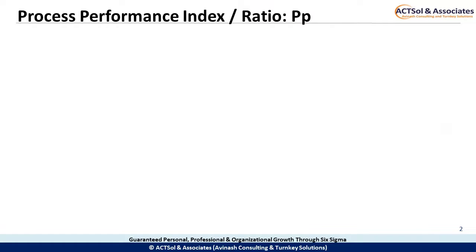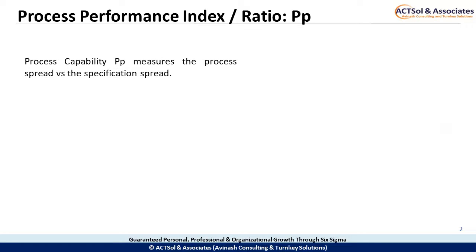How do you know if your process is capable? Process Capability measures the process spread versus the specification spread — in other words, how distributed the outcome of your process is versus what the requirements are.